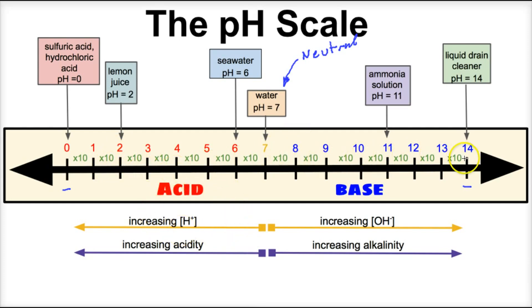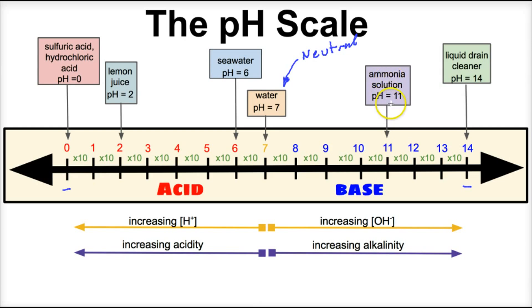As we move from seven to 14 on the pH scale, there's an increase in hydroxide ions and a decrease in the amount of hydrogen ions floating around in that solution. As we move from seven to 14, there's an increase in alkalinity — the base becomes stronger. At a pH of 11, we have ammonia, which is a cleaning agent. We also have liquid drain cleaner like Drano or Lye, another very strong base at a pH of 14.